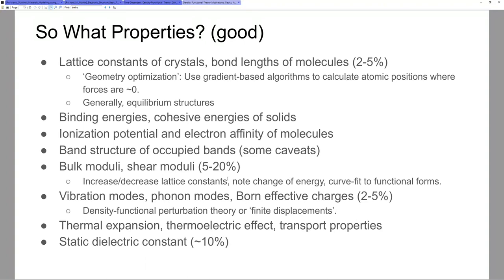You can get vibration modes and phonon modes — this is important because finite temperature studies are all the jam these days. You can get Born effective charges, which is a way of saying: here is an ion inside a material, and roughly, this appears to be the charge of the ion in this material. Thermal expansion, thermoelectric effect, transport properties — these are all things you can calculate. Thermal expansion is not too much trouble; thermoelectric effect is about 10 seconds of post-processing after a DFT calculation; transport calculations maybe 10 minutes of post-processing.